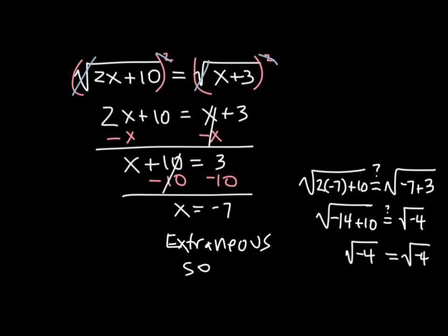Because it creates an apparent solution that does not work in the original equation. Because when you put the value of x in, it gives you a negative under the root, which is not a real number. So, x equals negative 7 doesn't work. It is an extraneous solution.